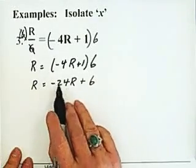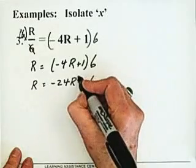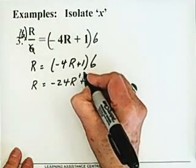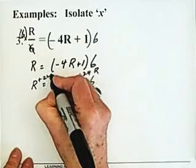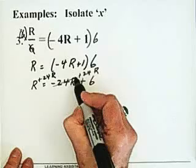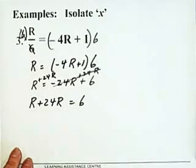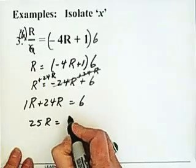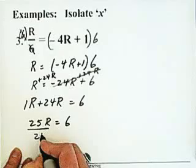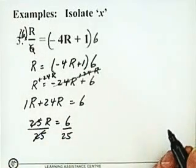Now we still need to get these r's on the same side. So I need to take this minus 24r and move it over to the left by adding plus 24r to both sides. Minus 24r plus 24r gives me 0. So on the left I have r plus 24r equals 6. r plus 24r is 25r, because there's a 1 in front of this r. So 25r equals 6. I'm going to divide by 25 on the left and divide by 25 on the right. These two cancel and I'm left with r equals 6 divided by 25.